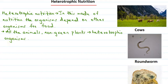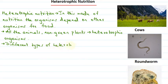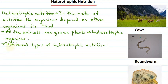There are different types of heterotrophic nutrition. In autotrophic nutrition, autotrophs prepare their food by the process of photosynthesis. But now that these organisms are dependent on other organisms for food, we will see what are the different types of heterotrophic nutrition.